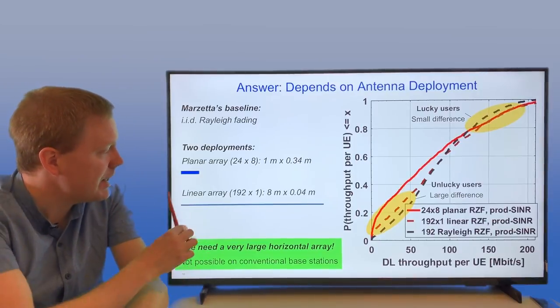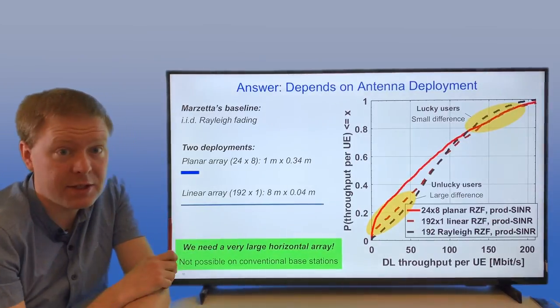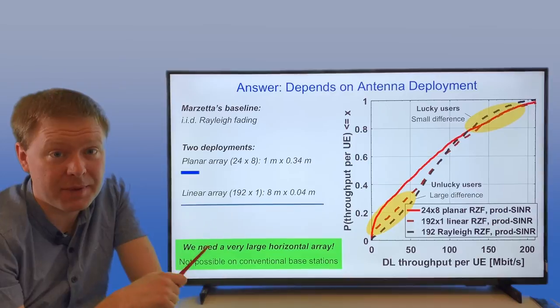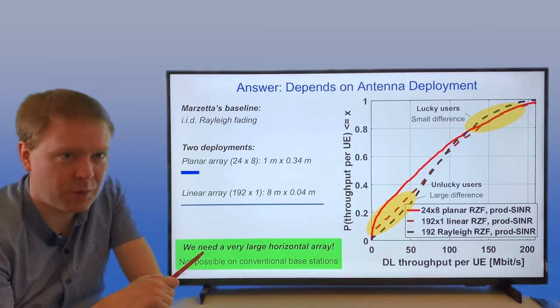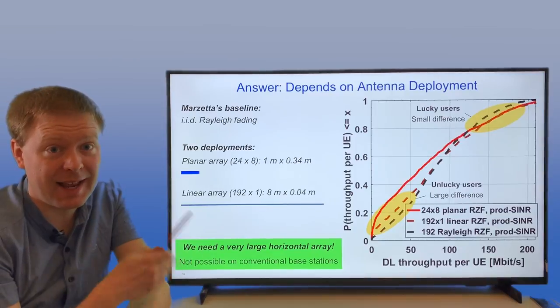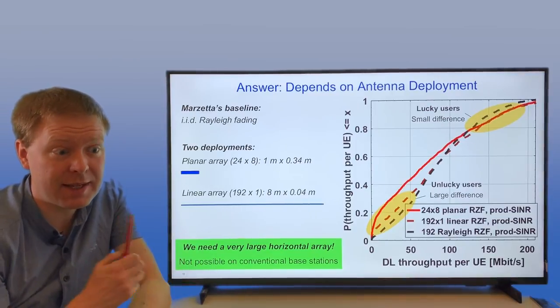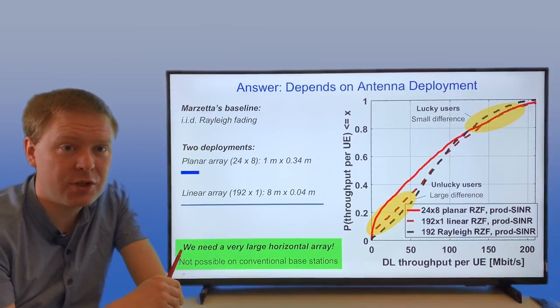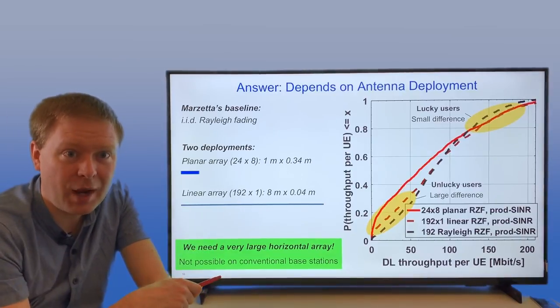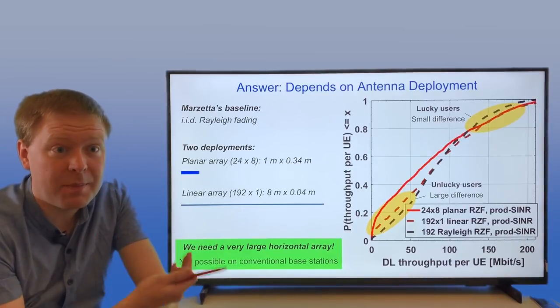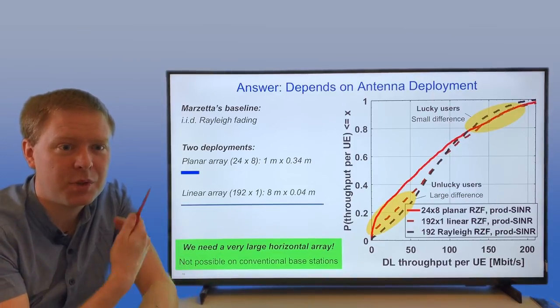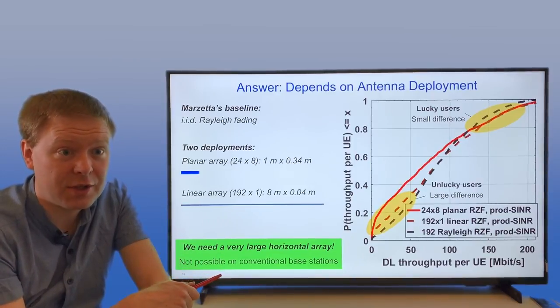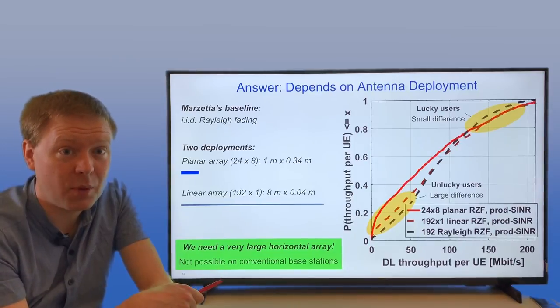The reason for that is that we need very wide linear arrays in order to get all the benefits that people have been demonstrating in theory. That is not what's possible to deploy in the classical way of having base stations. Even if we make them wider than traditionally, we're not going to have them eight meters wide. So Massive MIMO is not the end of the story when it comes to improving the cellular technology. We need to find new ways of deploying networks.